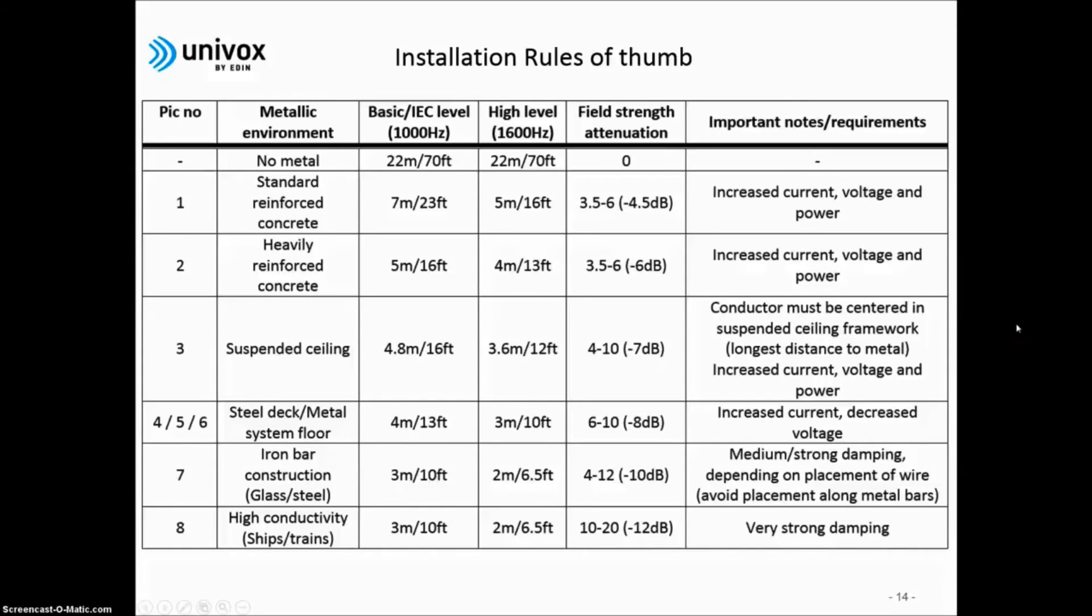As the width of the loop is vital to ensure a system that will meet the IEC requirements, we, here at Univox, design systems according to these rules of thumb. As an example, if the loop cable is installed on reinforced concrete, the maximum loop width allowed is 5 meters. However, the best practice is to go on-site and test. Please keep tuned for future videos on how to perform test loops.